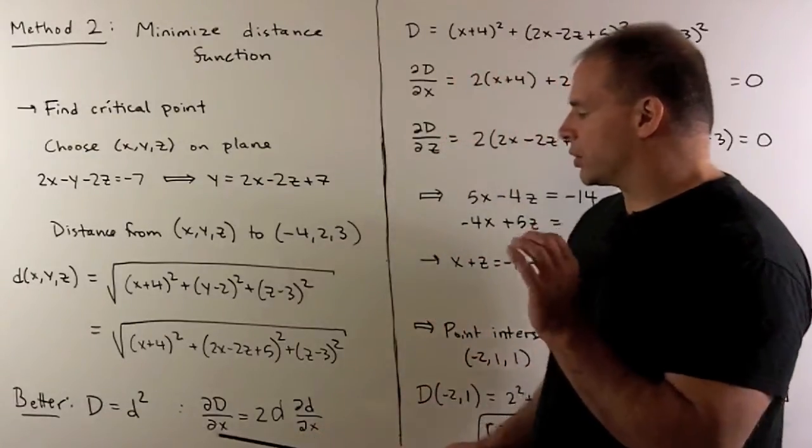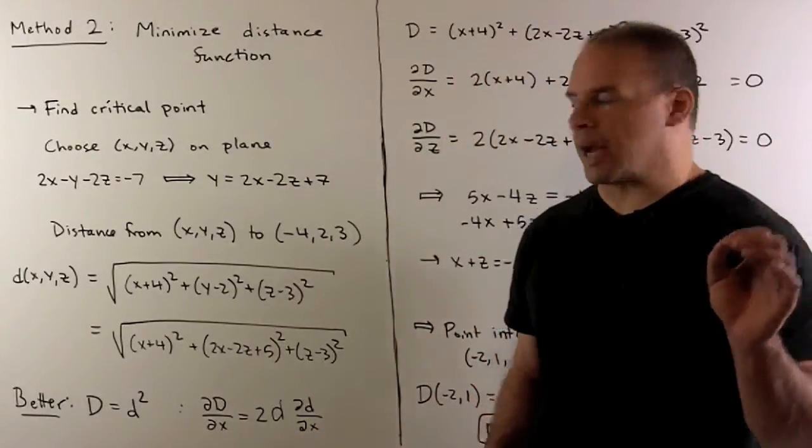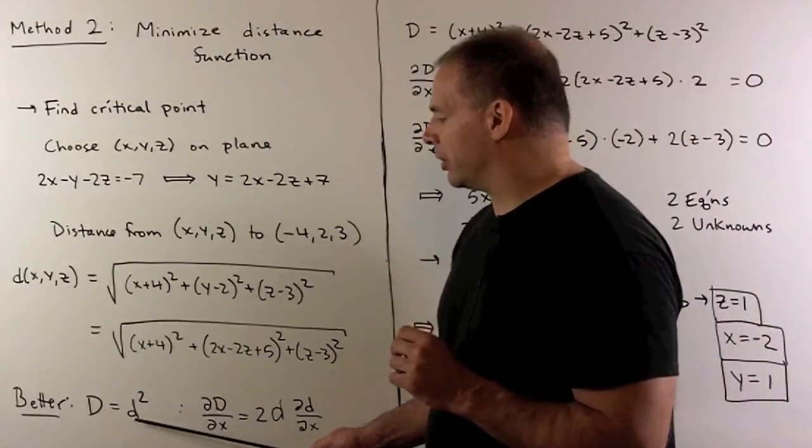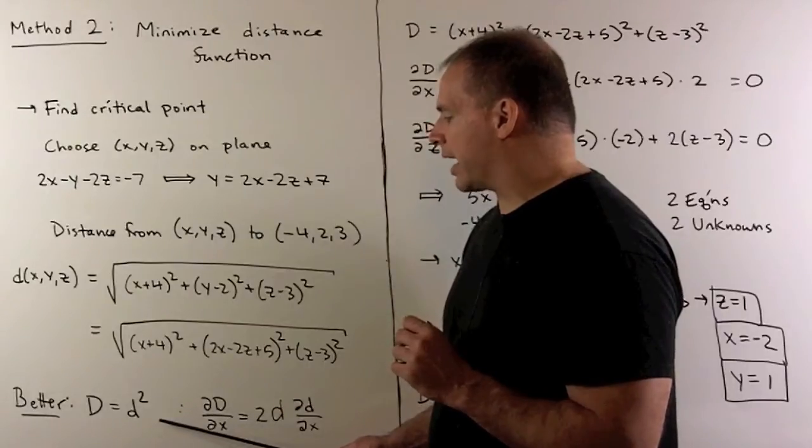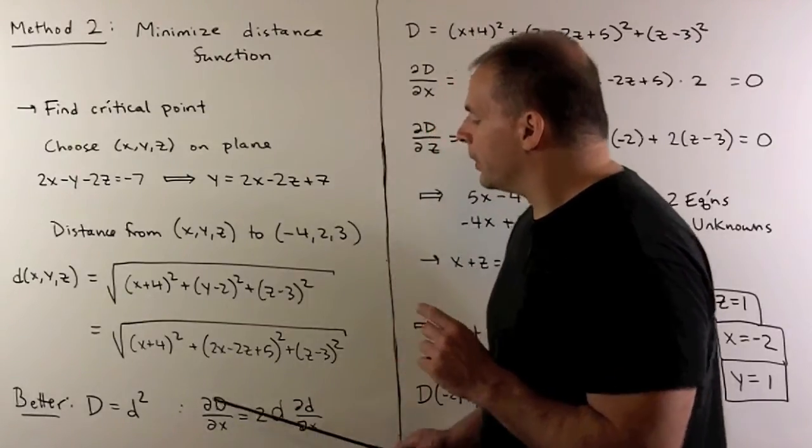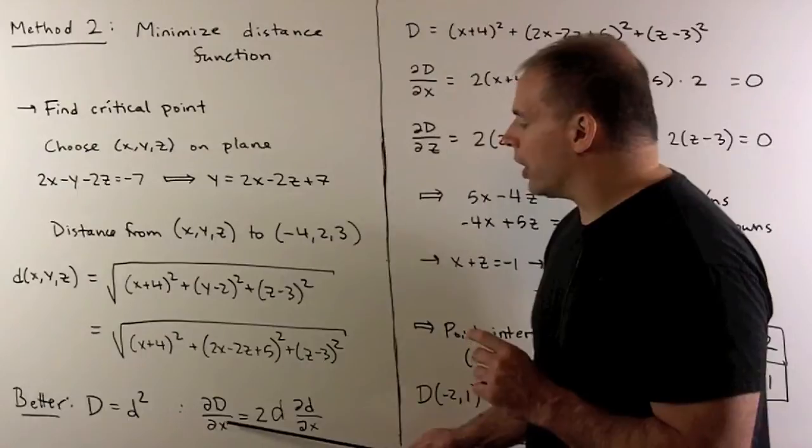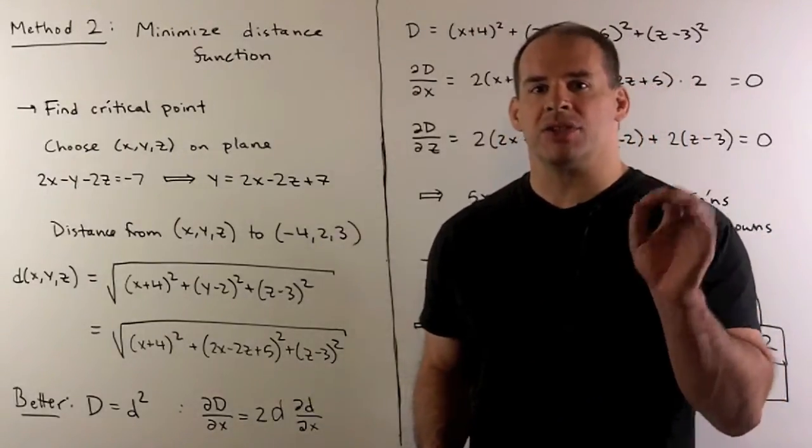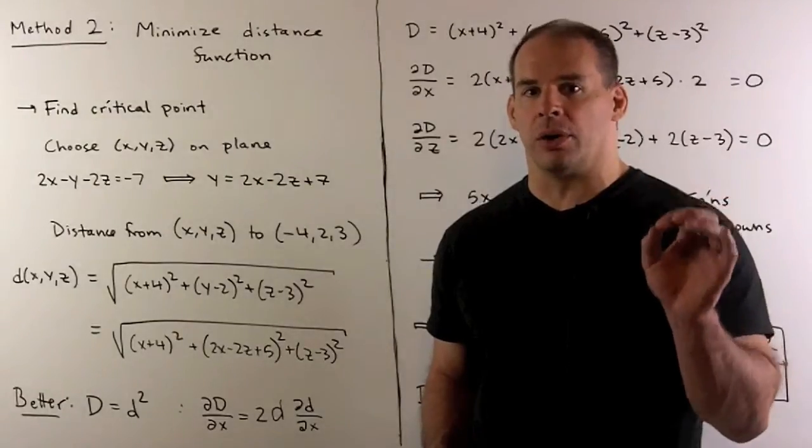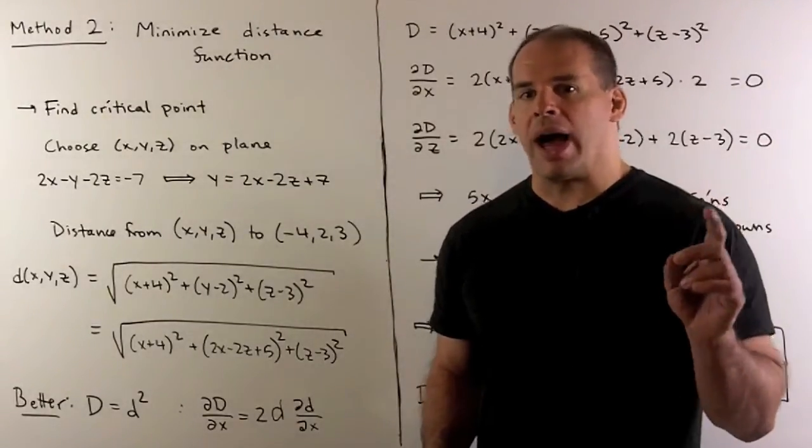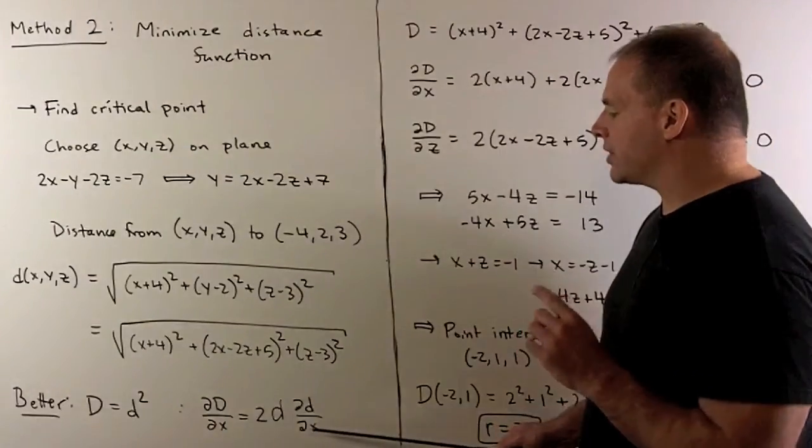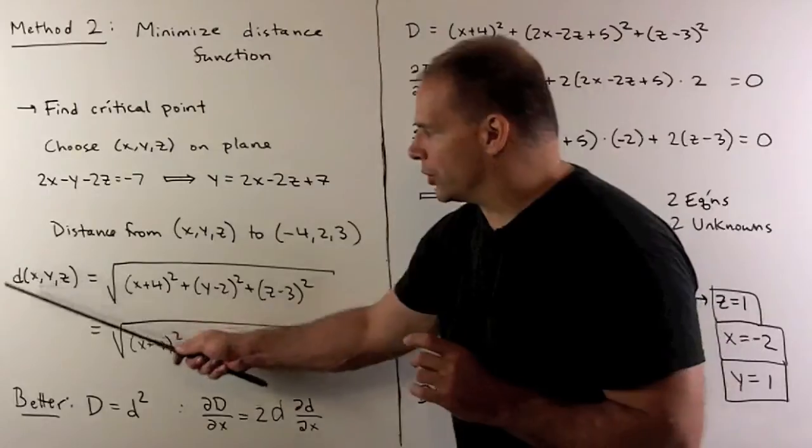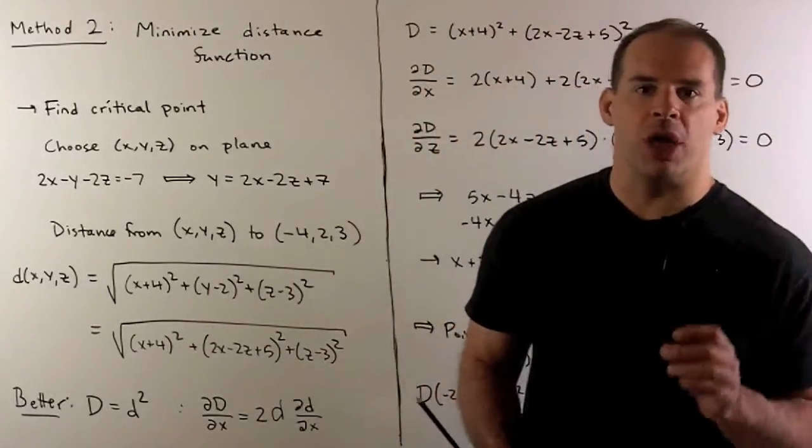Now, why does this work? If I take the partial of capital D with respect to x, chain rule says we get two times little d times the partial of little d with respect to x. Now, when can this partial be equal to zero? Well, if d is equal to zero, that's great. Distance is minimized since the smallest the distance can be is zero. Otherwise, we have partial of d with respect to x equal to zero. And that would be what we were looking for if we were just using the plain old distance function. So that works also.